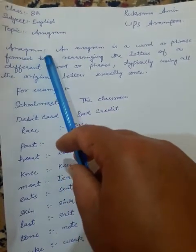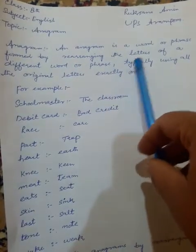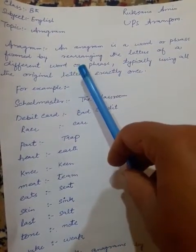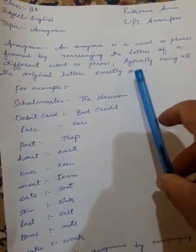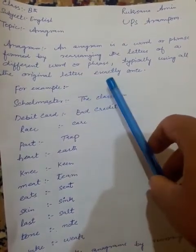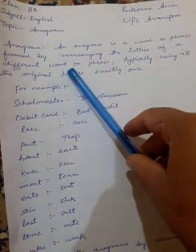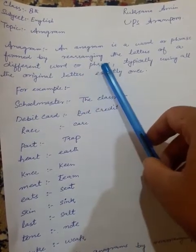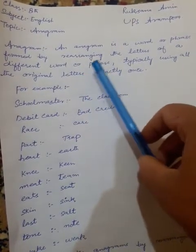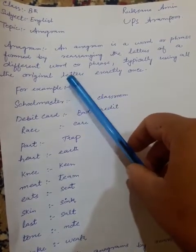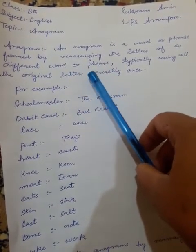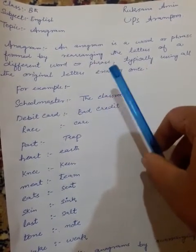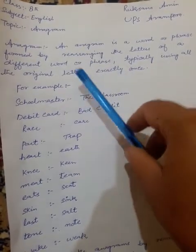What is an anagram? An anagram is a word or phrase formed by rearranging the letters of a different word or phrase, typically using all the original letters exactly once. These are words that we rearrange to make other words — we call them anagrams.